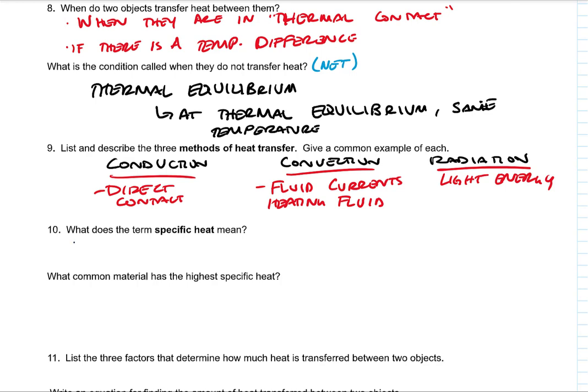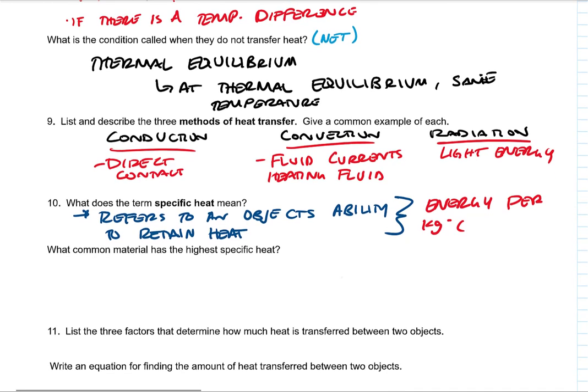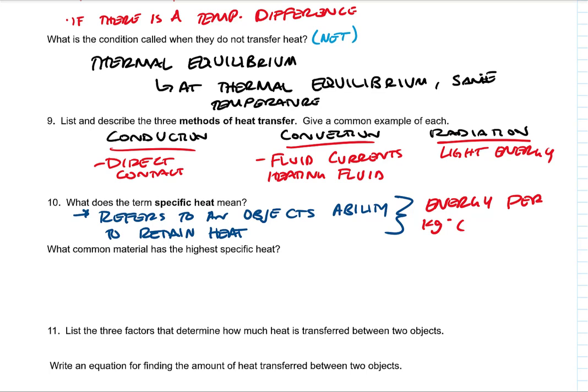What is the term specific heat? It refers to an object's ability to retain heat. And what it is is the energy per kilogram degree Celsius. So how much energy it takes to raise a kilogram a degree Celsius. That's the specific heat. What common material has a high specific heat? Water is a particularly good insulator. It takes a lot of energy to change water.